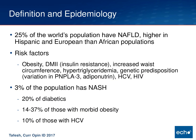This is incredibly common — 25 percent of the world's population has fatty liver disease. It is higher in Hispanic and European populations than in African populations. Risk factors include obesity, type 2 diabetes, and insulin resistance, which is thought to be key in the pathogenesis of NAFLD. Also increased waist circumference, hypertriglyceridemia, and some genetic predispositions — variations in genes that code for adipocyte cytokines like adiponeutrins. HCV and HIV itself are also risk factors. Three percent of the world's population has NASH, and up to 20 percent of diabetics can have it. Ten percent of hep C-infected people have NASH by biopsy.